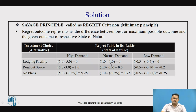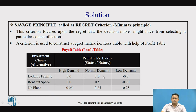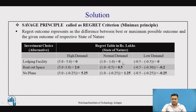Similarly, for normal demand, we calculate the regret outcomes. The best outcome from the second state of nature is 1. So: 1 minus 1 is 0, 1 minus 0.5 is 0.5, and 1 minus (−0.25) is 1.25. For low demand, using the same methodology, we get the values as 0, and minus 0.25.